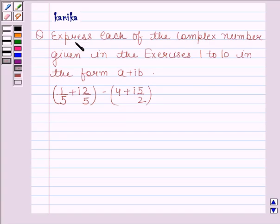The question says: Express each of the complex numbers given in exercises 1 to 10 in the form A plus iota B.